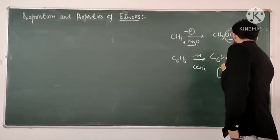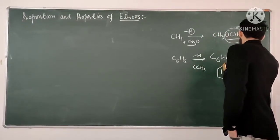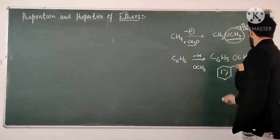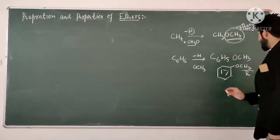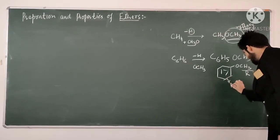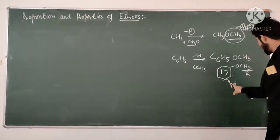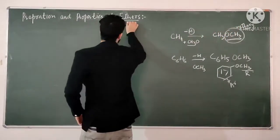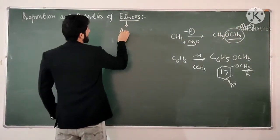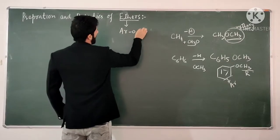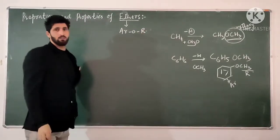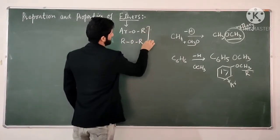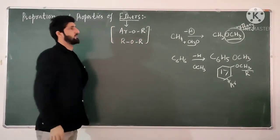The general structure of an ether: this alkyl chain is represented as R, and an aromatic ring as Ar. So the general formula of ether is either R-O-R or Ar-O-R. This is the general formula of ethers.